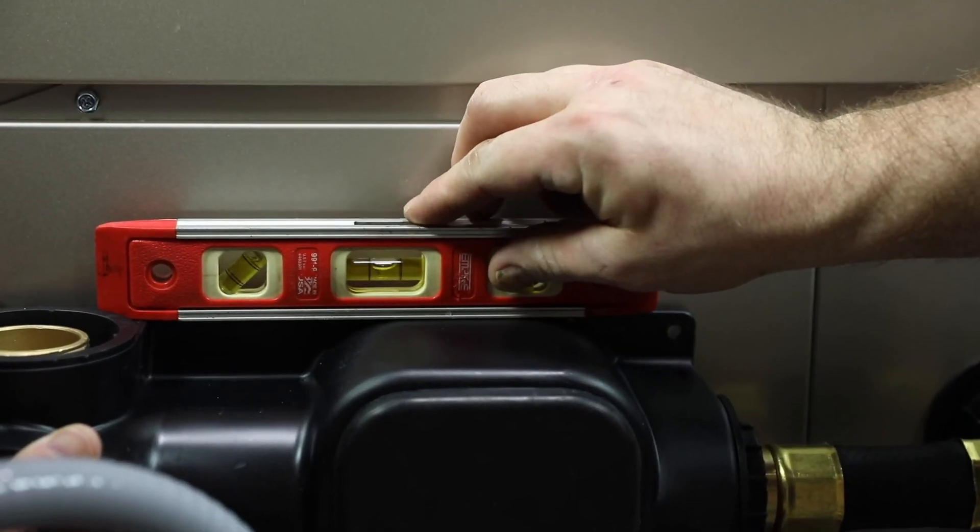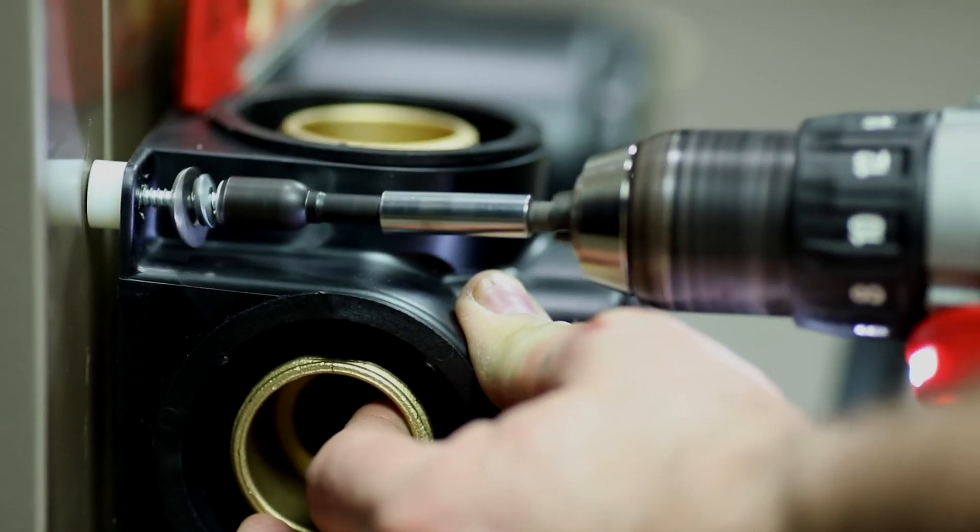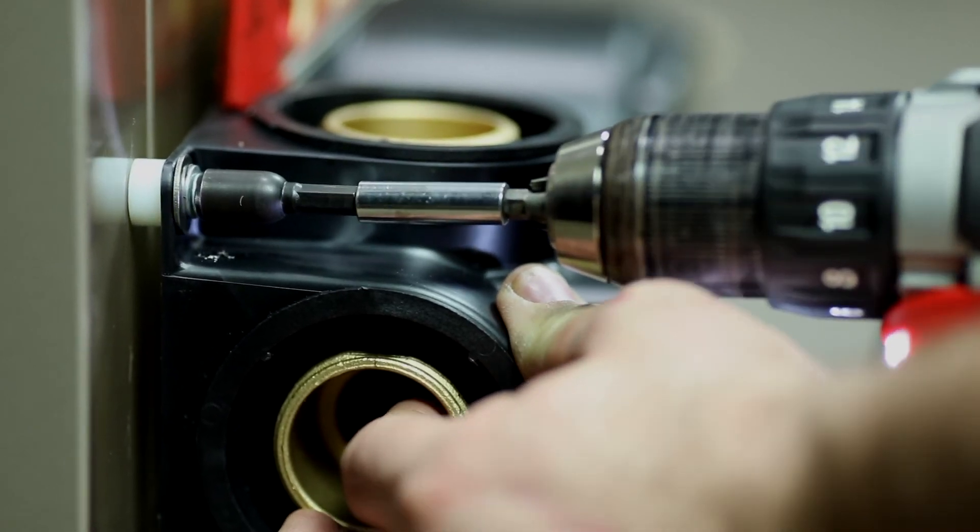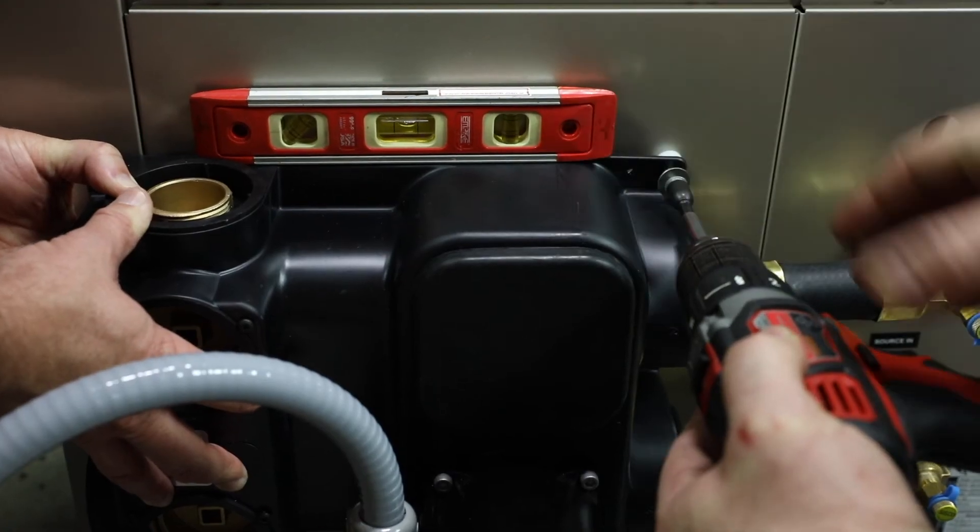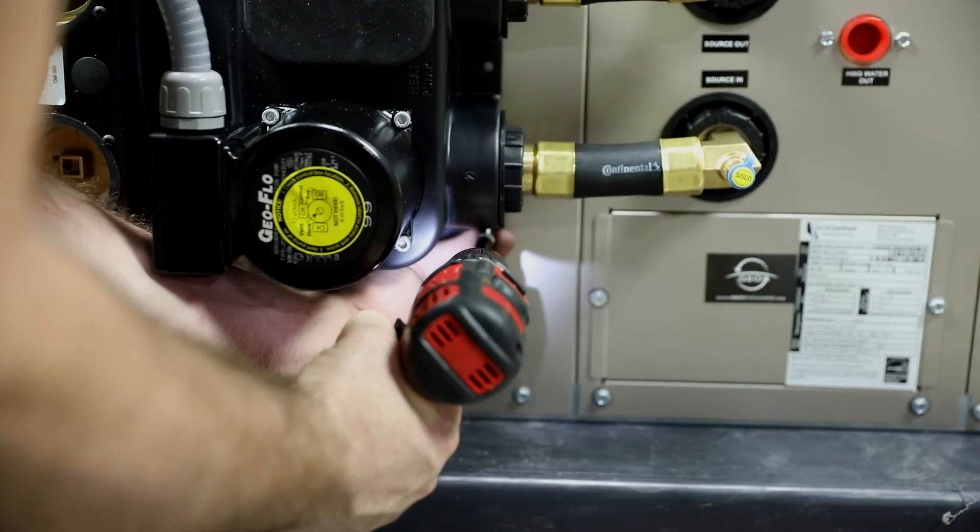It is important to level the flow center. Drive the self-tapping screws into the corner post and then panel one at a time. Do not over tighten to avoid stripping the sheet metal panels. We recommend starting with the top corner post screw and check if it's level before securing the remaining three screws.